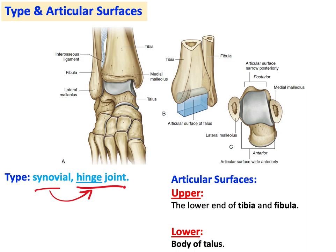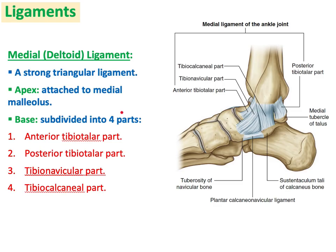The ankle joint is a synovial joint — specifically a hinge joint, similar to the elbow. It permits only flexion and extension. Someone might ask about eversion, inversion, and rotation — those occur at the subtalar and calcaneocuboid/calcaneonavicular joints. At the ankle joint itself, it is just flexion and extension. Superiorly you have the lower end of the tibia and the fibula laterally; inferiorly you have the body of the talus.